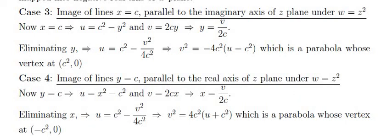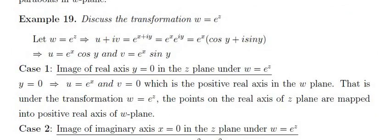Example 19: Discuss the transformation w = e^z. Here w = u + iv = e^(x+iy) = e^x · e^(iy) = e^x(cos y + i sin y). Therefore u = e^x cos y and v = e^x sin y. We now find the images of various curves under this transformation.